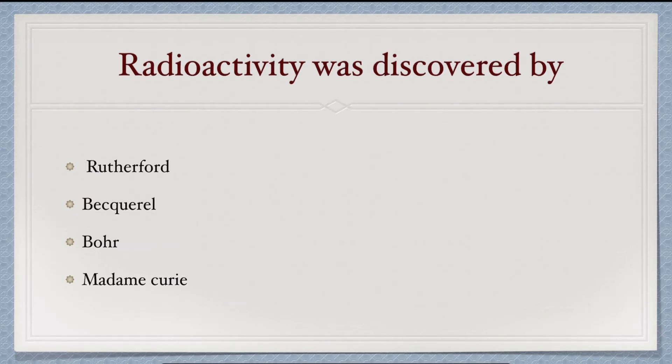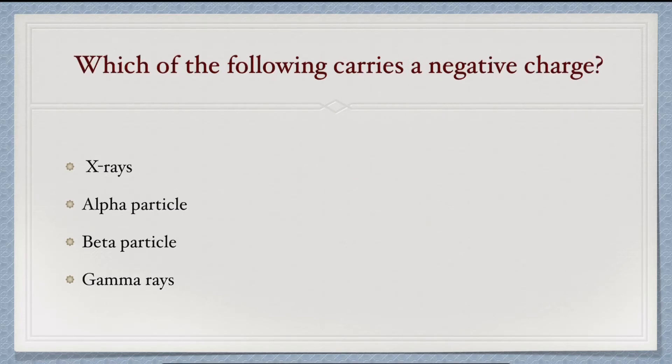Next: radioactivity was discovered by French scientist Henry Becquerel in 1896, so option second is correct. Next question: which of the following carries a negative charge? X-rays do not have mass or charge, gamma rays do not have charge, alpha particles carry two protons meaning two positive charges. Beta particles carry one electron, so one negative charge. The answer will be beta particle.